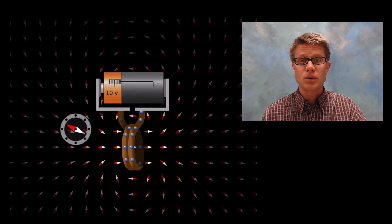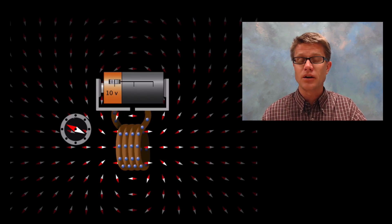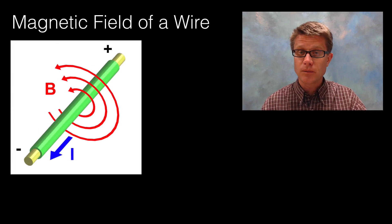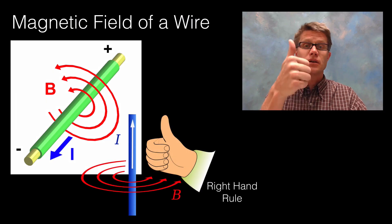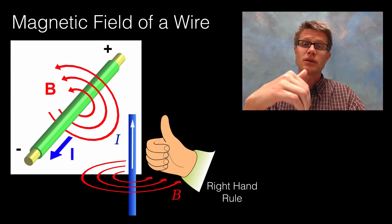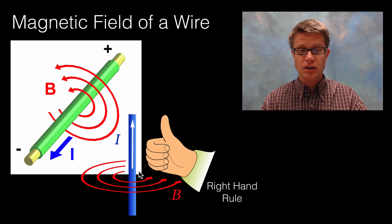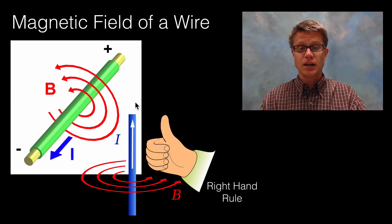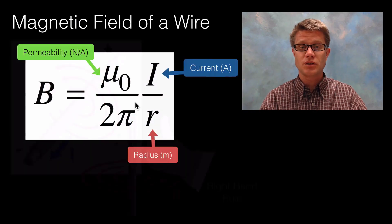What happens if we add more wires? We're adding more current, and you can see the magnetic field gets greater and greater over time. Here's the right-hand rule again: if we've got current moving through a wire — conventional current — point your thumb in the direction of the current and your fingers curl around to show where the magnetic field is. Current going up means the magnetic field curls around like that. If the current goes in the other direction, the magnetic field goes in the opposite direction.